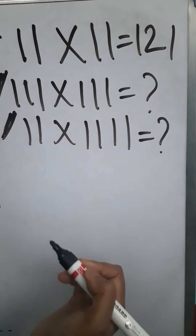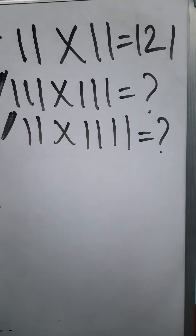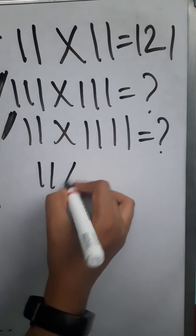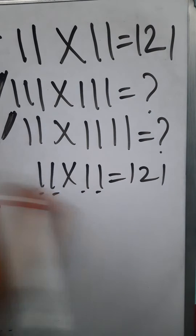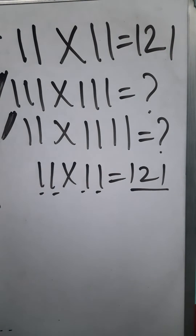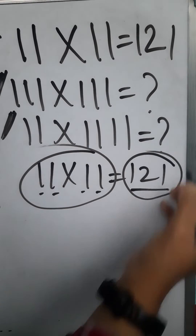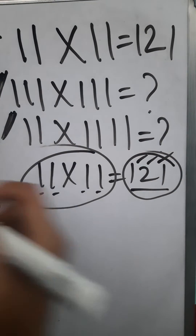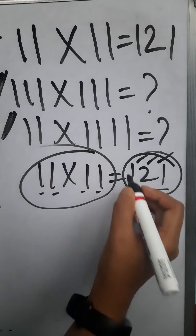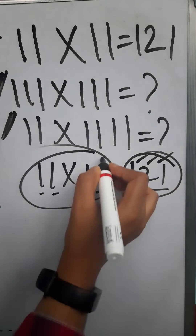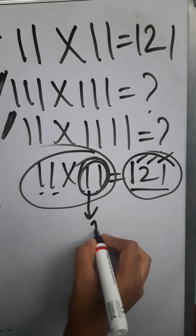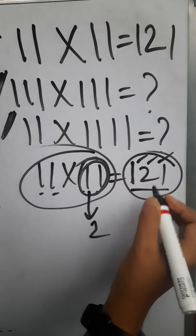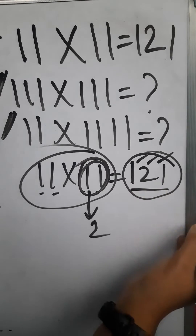We all know 11 into 11 is 121. For 11 into 11, the total number of digits is 4, and the multiplicative result should be of total digits minus 1, that is 3 digits. The multiplication starts with 1 and increases up to the minimum number of digits of one number, which is 2, so it increases from 1 to 2 and then decreases from 2 to 1.